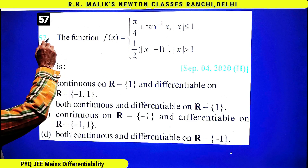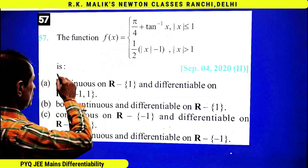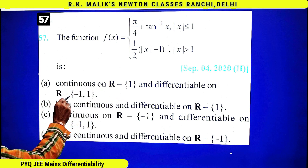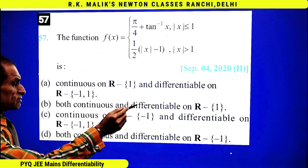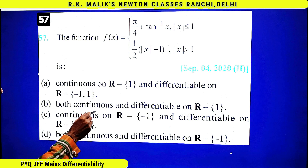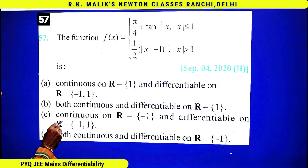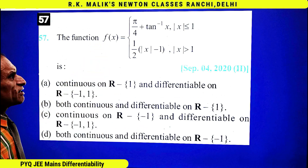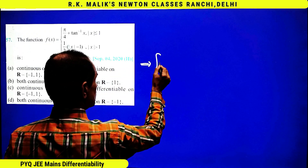In this question, the function f(x) is defined as given. The options state it is: continuous on R minus {1} and differentiable on R minus {-1, 1}; both continuous and differentiable on R minus {1}; continuous on R minus {-1}; and differentiable on R minus {-1, 1}; or both continuous and differentiable on R minus {-1, 1}. To do this question, I will first redefine f(x).